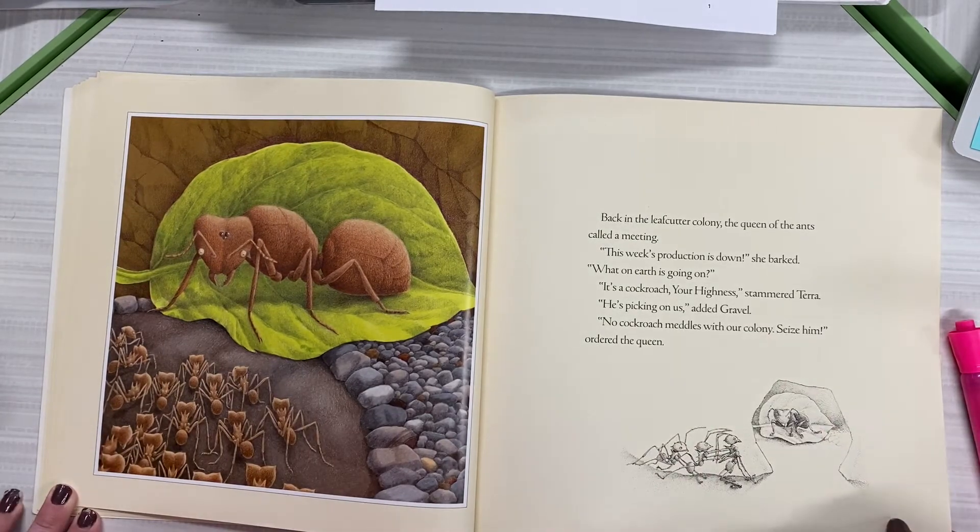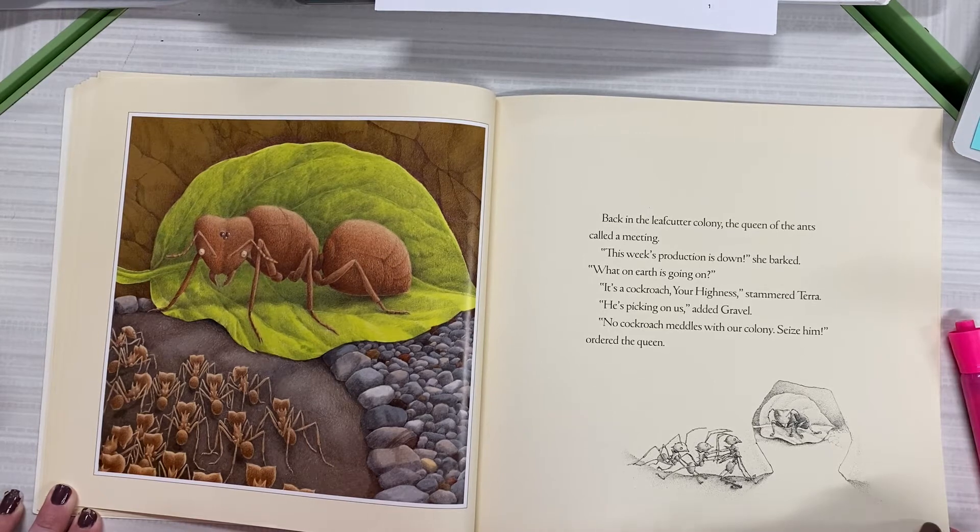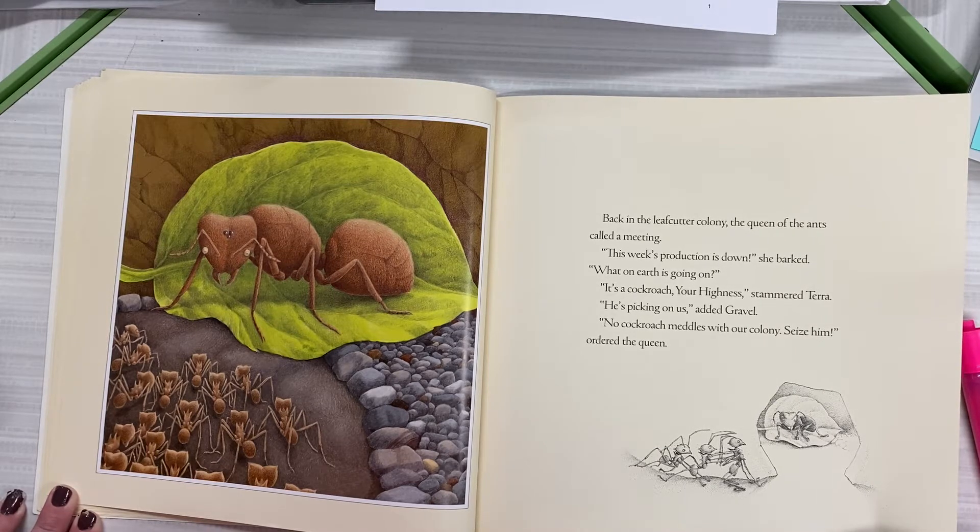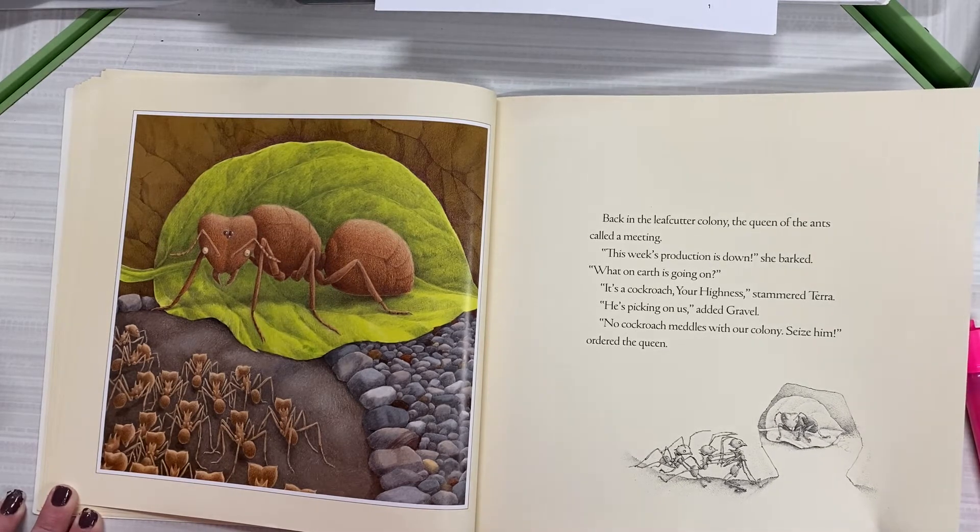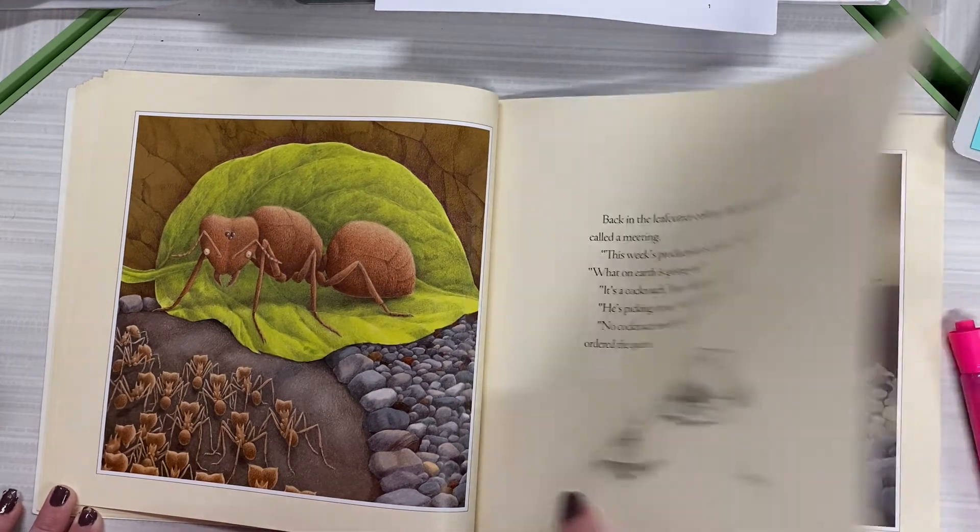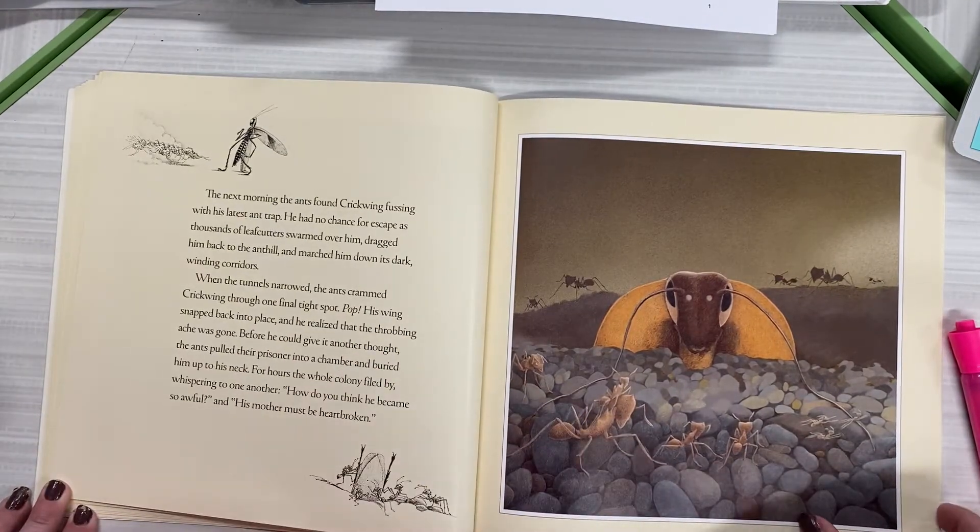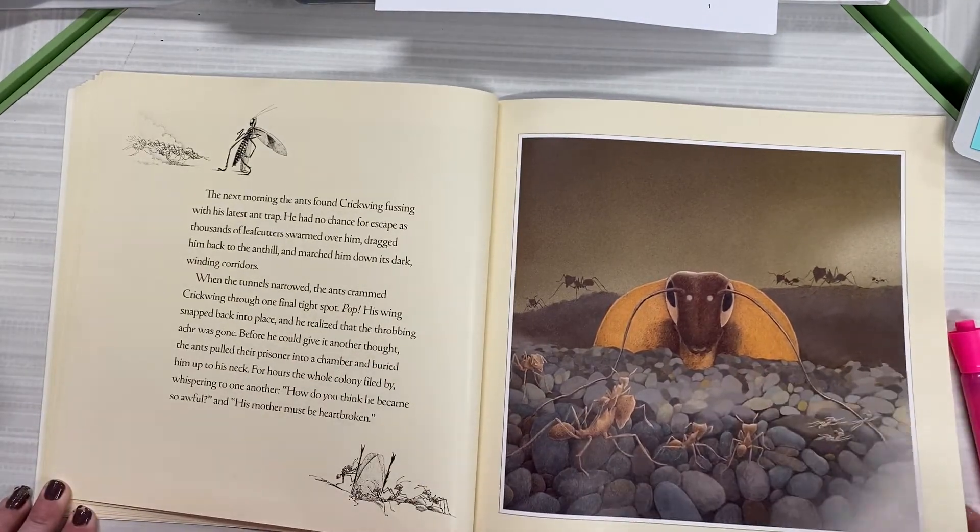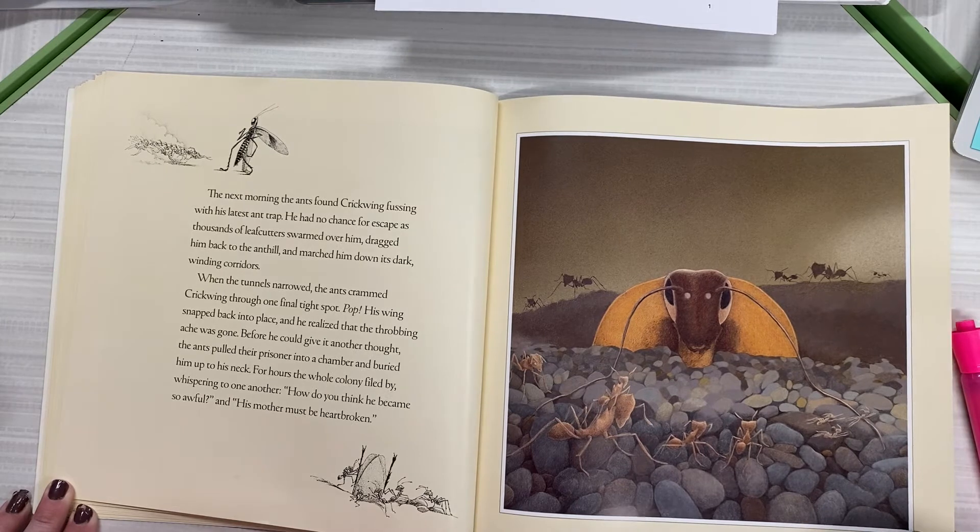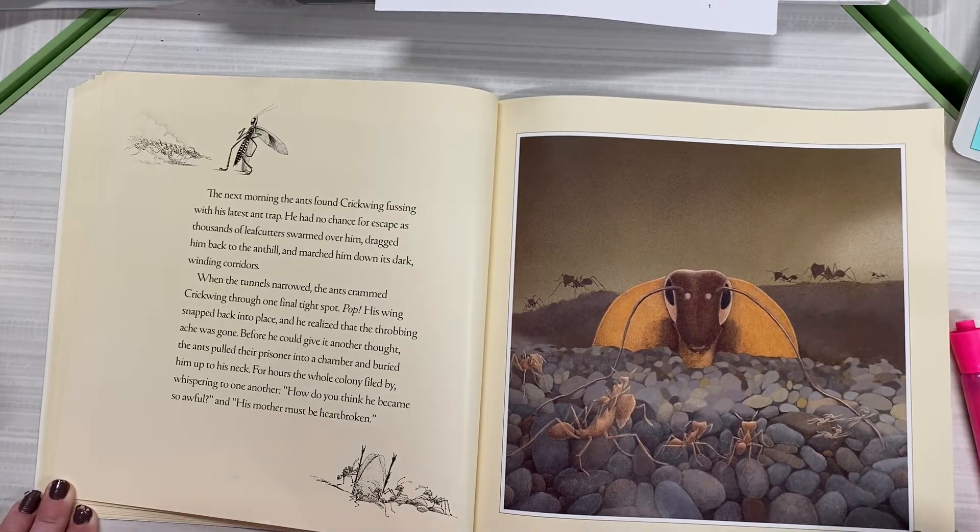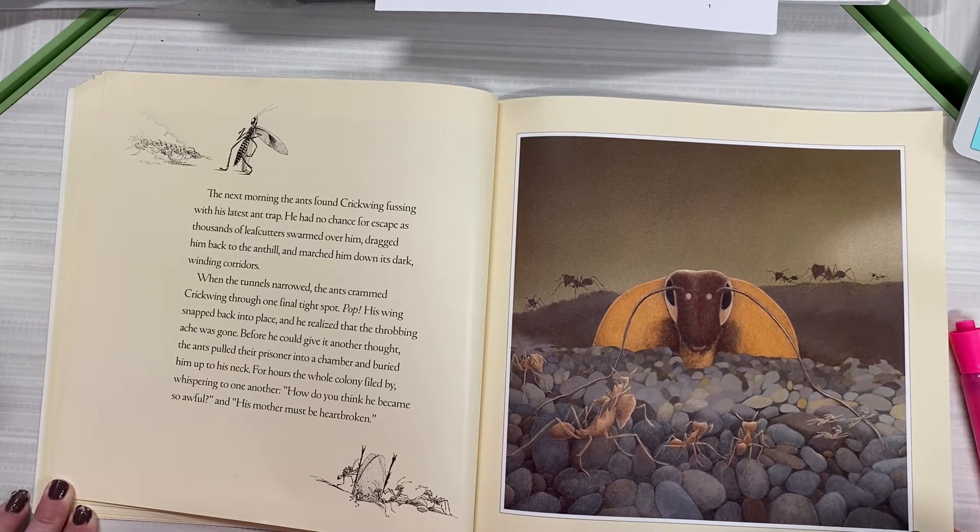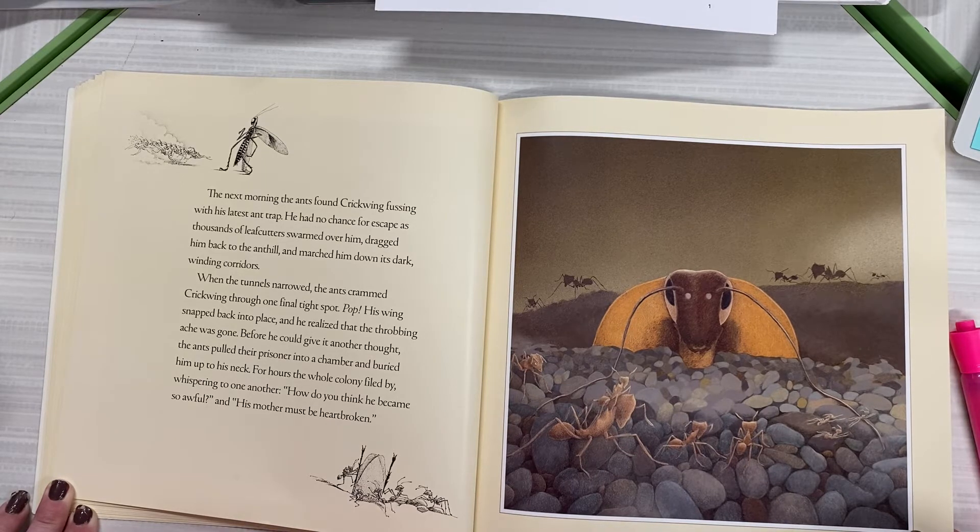In the very early dawn, the ants rose as usual and went to work. When they returned, their cargo clamped in their jaws, they could barely see their way. They plummeted into the trap, piling into a great green heap. These muddling molecules are so easy to fool, snorted Crickwing. Back at the leaf cutter colony, the queen of the ants called a meeting. This week's production is down, she barked. What on earth is going on? It's a cockroach, your highness, stammered Tara. He's picking on us, added Gravel. No cockroach medals with our colony. Seize him, ordered the queen.